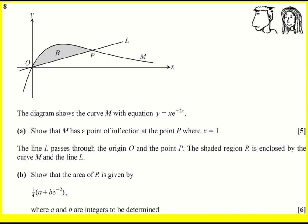We have an interesting curve here and then a straight line that is hitting at P. We're asked to show that M has a point of inflection at P where x is equal to 1.